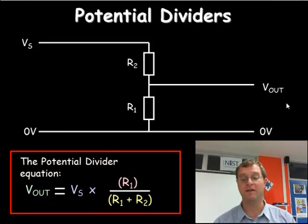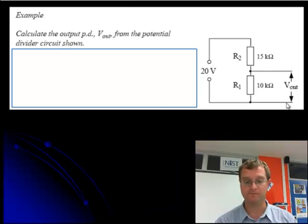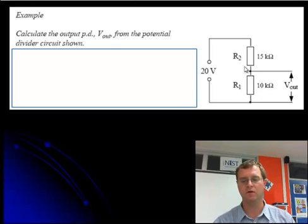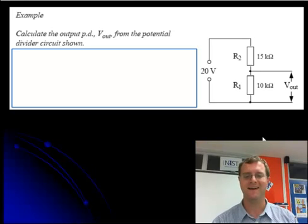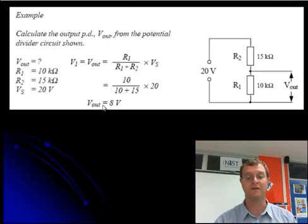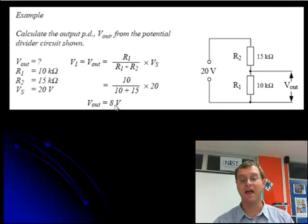So with that in mind, let's try some problems. Calculate the output PD, so the V out from the potential divider circuit shown below. We know R1, we know R2, and we know the voltage supply. So that means it's a question of bringing out the formula and working out the unknown. And we'll stop for a moment, give you a chance to calculate that. And now you've had the chance to do that. Hopefully you worked out that the V out is going to be 8 volts.